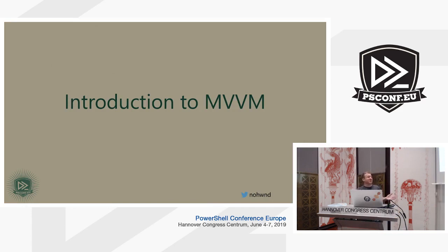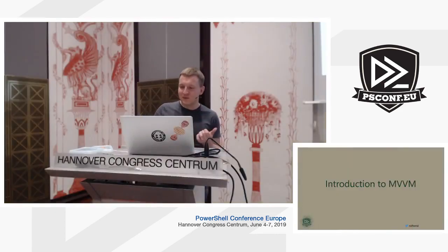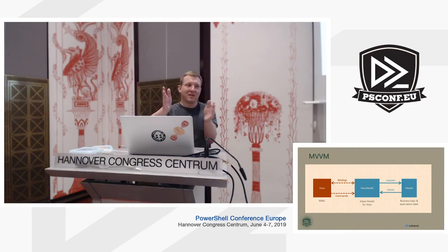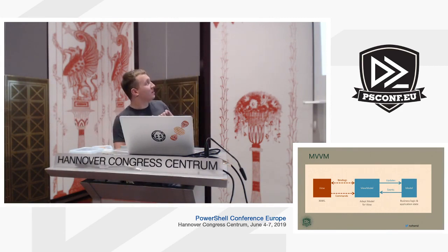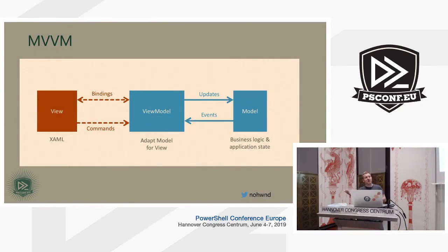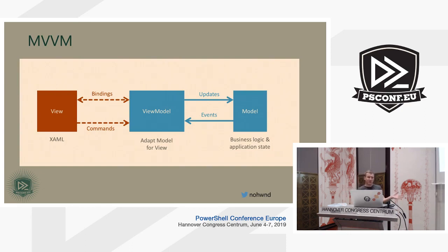MVVM stands for Model View ViewModel. The view is the XAML, behind it is the ViewModel — just an object the XAML uses to get its data — and they're connected by bindings. Bindings can be one-way or two-way. For a label you push text from the ViewModel into the label (one-way), and for a text box you want two-way so user input propagates back into the ViewModel automatically — no manual lookup, no state updates.